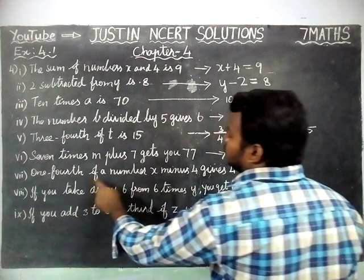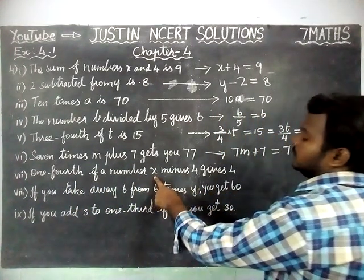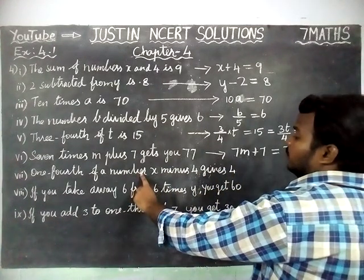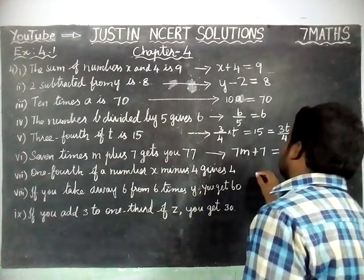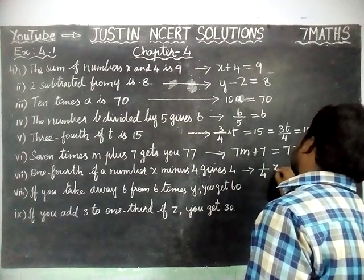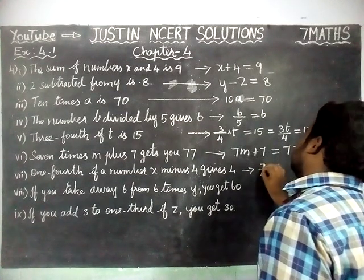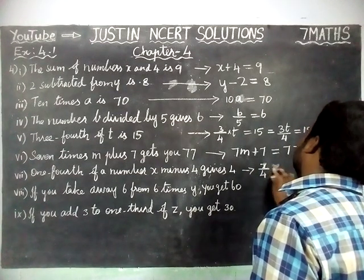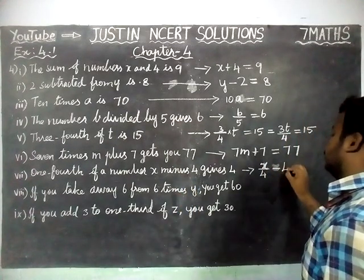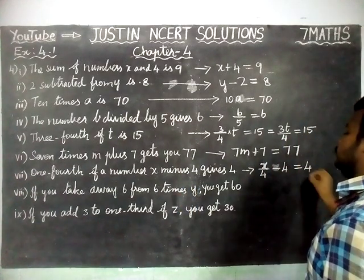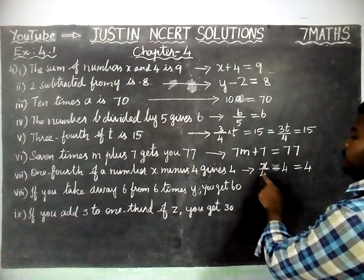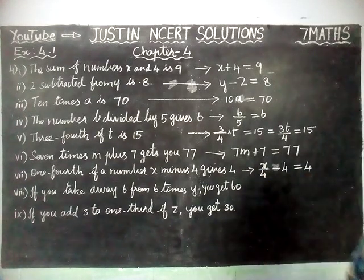Seventh question: 1 fourth of a number X minus 4 gives 4. So 1 by 4 of X, which we can write as X by 4. Therefore, X divided by 4 minus 4 is equal to 4.